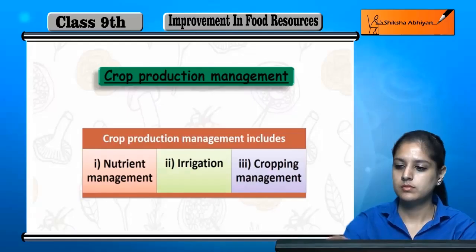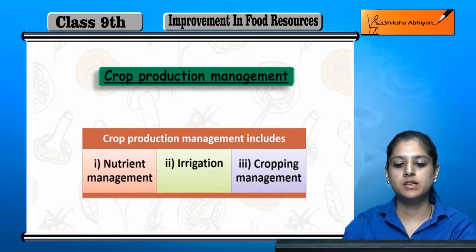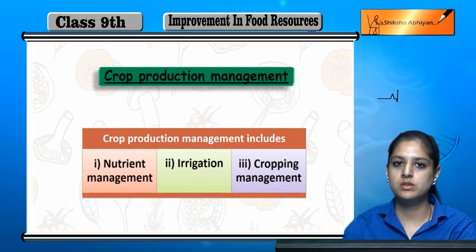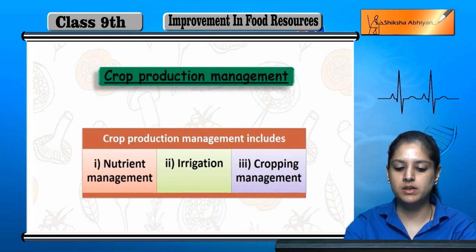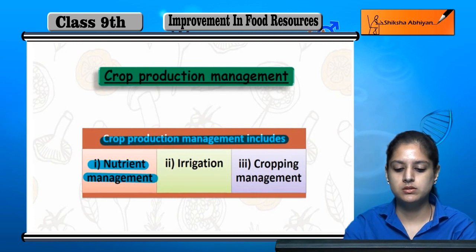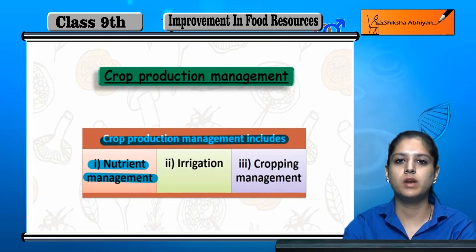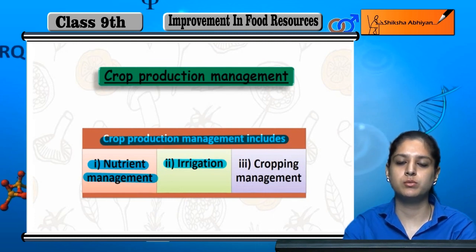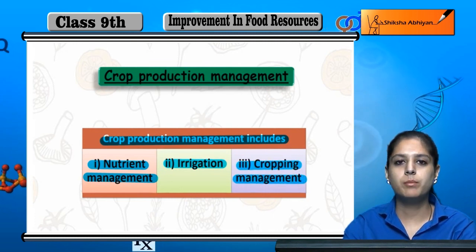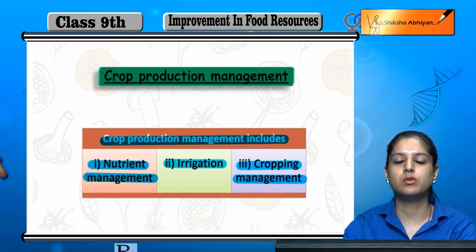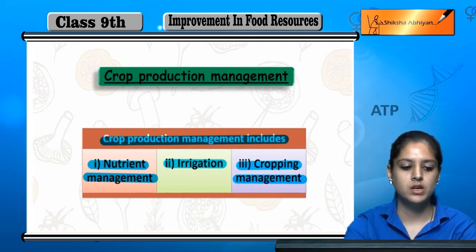Now let us see the second method, which is crop production management. When we produce crops, it is very important to manage crop production. There are three things: 1. Nutrients management, which means nutrient soil for plants. 2. Irrigation, which means proper availability of water. 3. Cropping management, which manages how crops are produced.